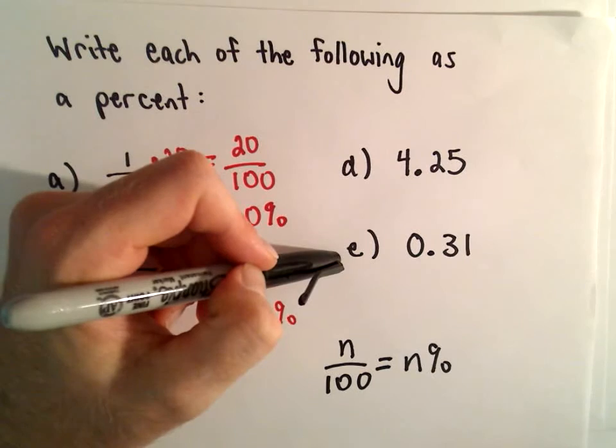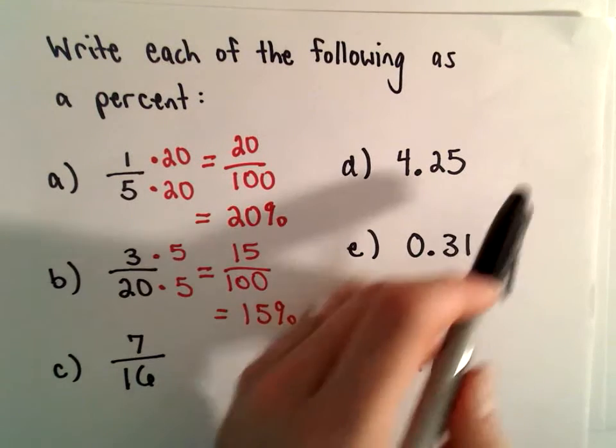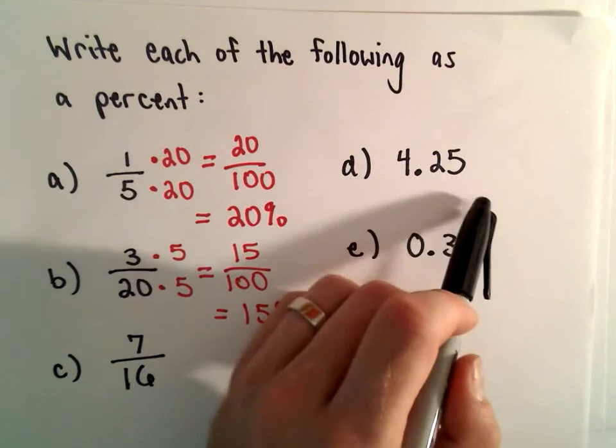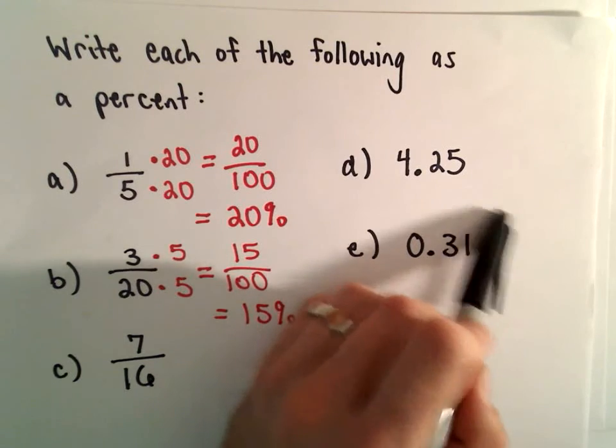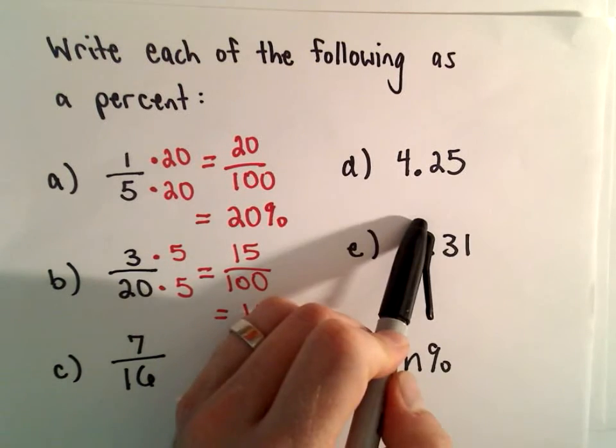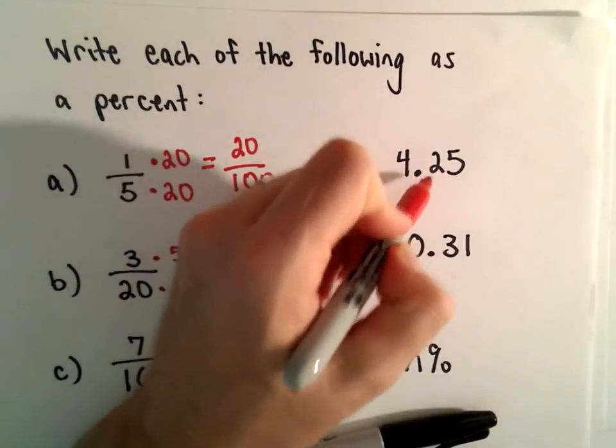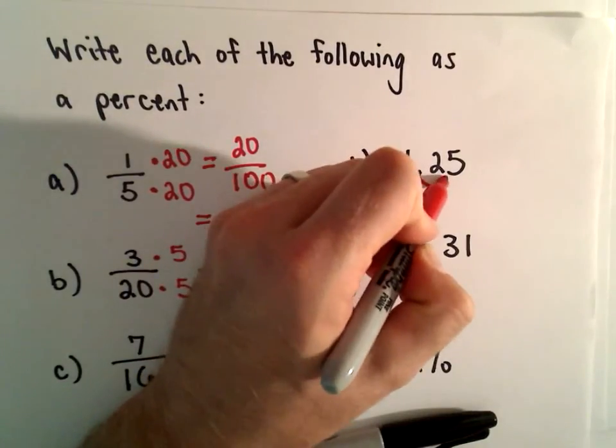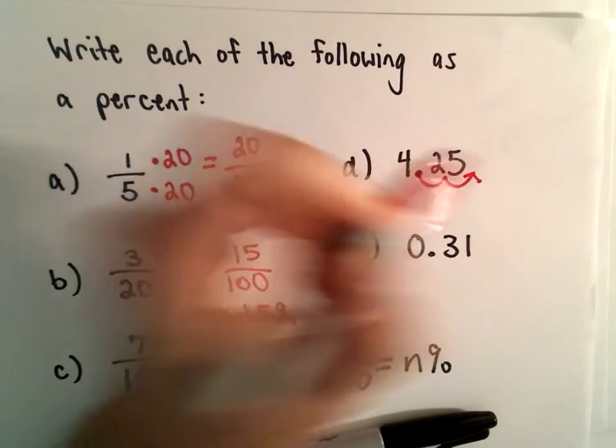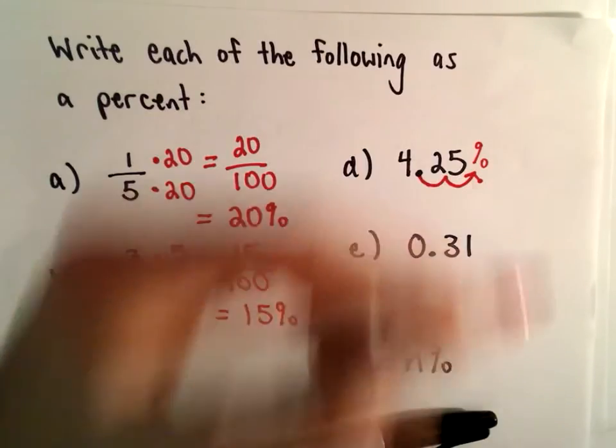D and E are nice. We've seen in other examples that to go from a percentage to a decimal, you replace the percentage and move the decimal two places to the left. Well, for these, what we do is we just undo that. We now move the decimal place two places to the right, and we turn that into a percentage.